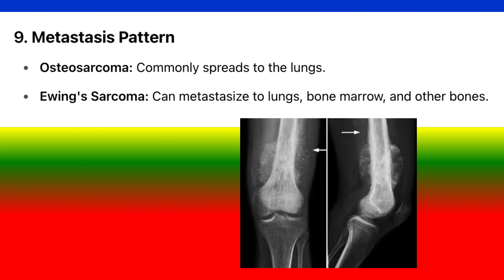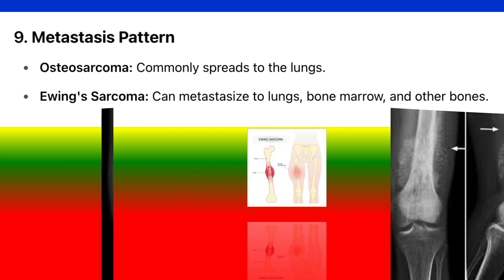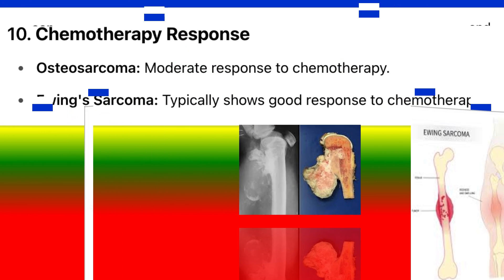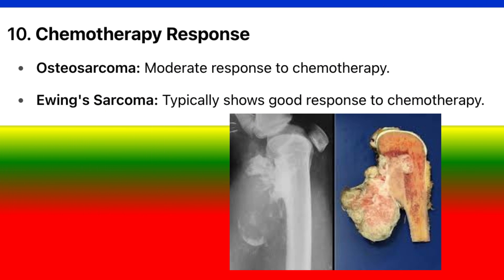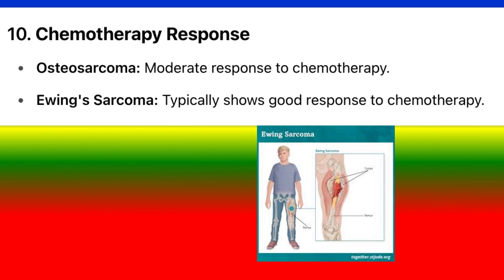9. Metastasis pattern. Osteosarcoma: commonly spreads to the lungs. Ewing's sarcoma: can metastasize to lungs, bone marrow, and other bones. 10. Chemotherapy response. Osteosarcoma: moderate response to chemotherapy. Ewing's sarcoma: typically shows good response to chemotherapy.